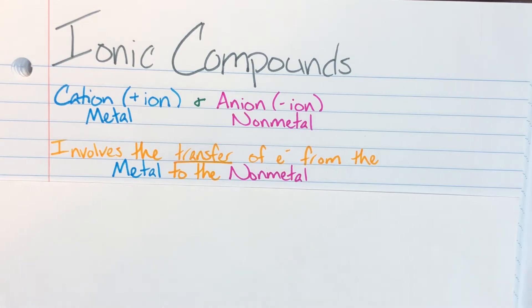So my metal, my cation, is going to be the one that is going to lose electrons. Therefore, it will have a positive charge because it will have more protons than electrons. Whereas my non-metal, the one who stole those electrons from the metal, will have a negative charge because it will have more electrons than protons.